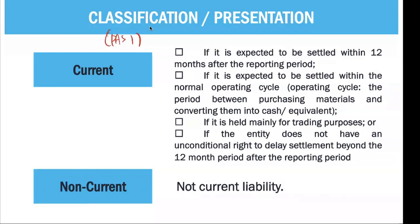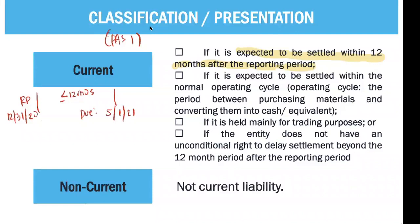A liability is current if it is expected to be settled within 12 months after the reporting period. What you need to look at is the reporting period, and from that date, settlement should be less than or equal to 12 months. For example, our reporting period is December 31, 2020, and the liability is due on May 1, 2021 — that is four months, which is less than or equal to 12 months, so we consider that as current.